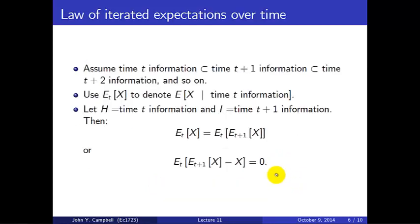Now we can write this in a way that may be a little bit less cumbersome than all these h's and i's. Let's assume that as time unfolds, the information we have at time t is less than the information that we have at time t plus 1, which is less than the information we have at time t plus 2, and so on. In other words, we keep adding information, but we never forget anything. Let's use a more compact notation. Let's write e sub t x to denote the expectation of x conditional on the information at time t.